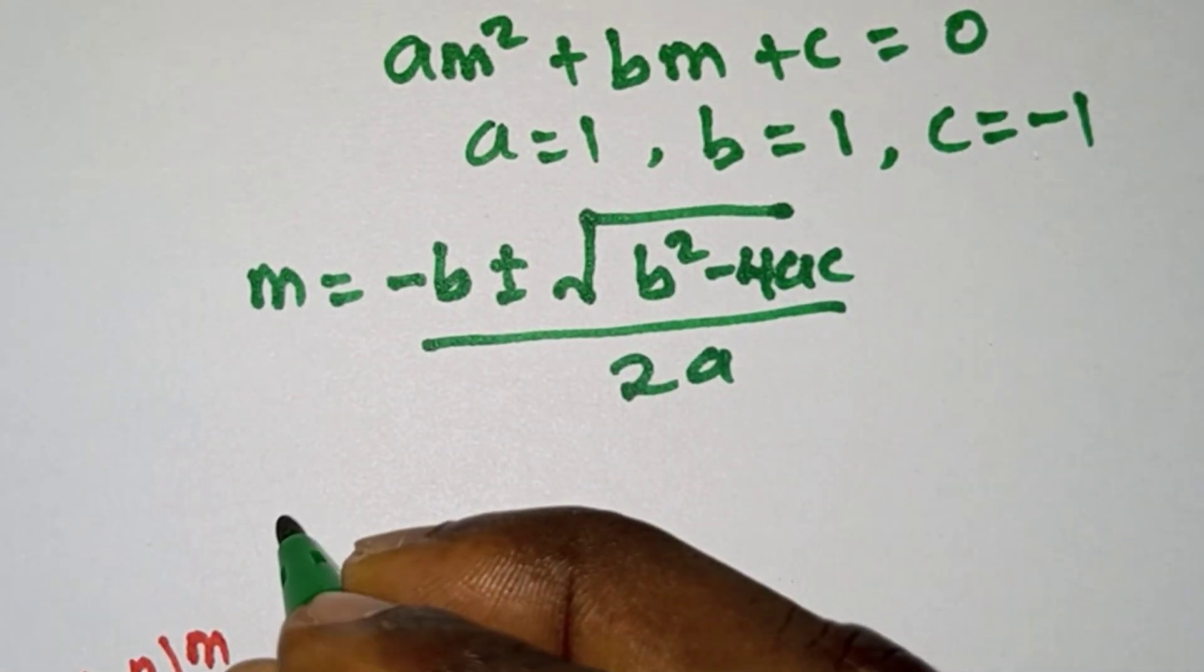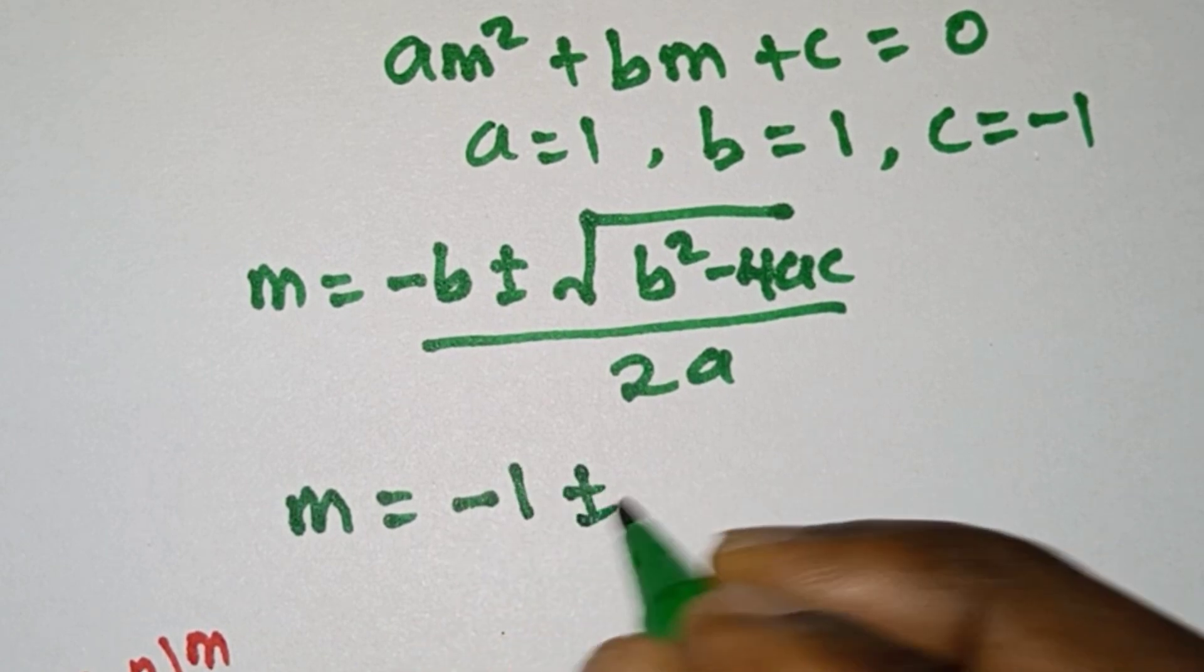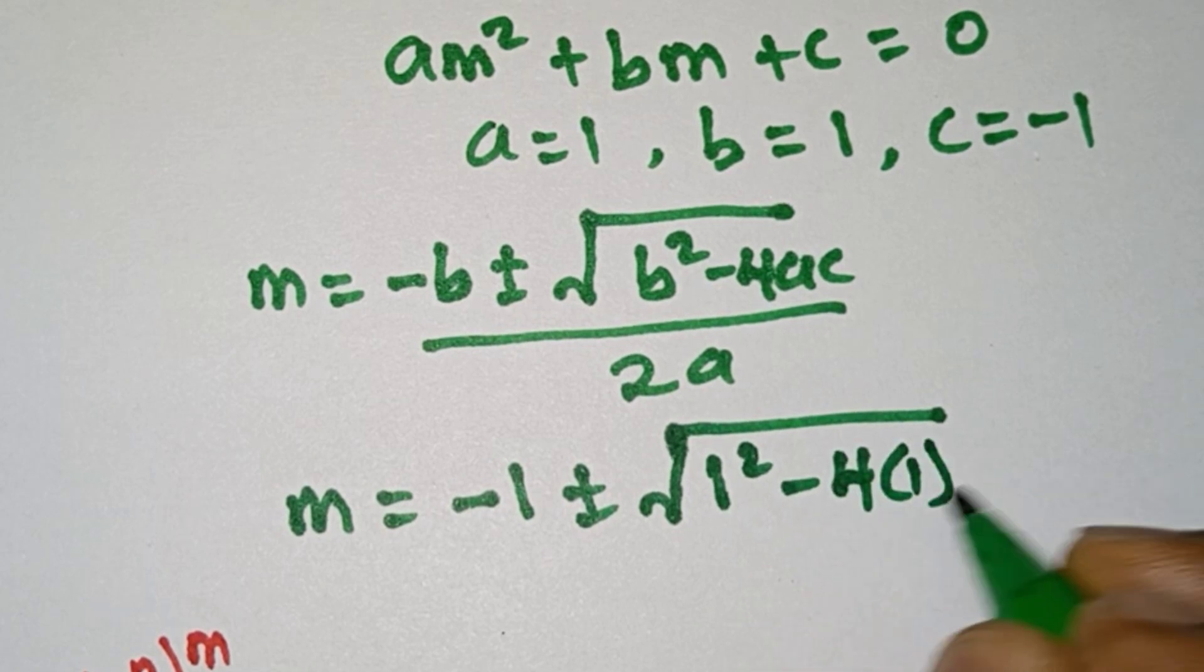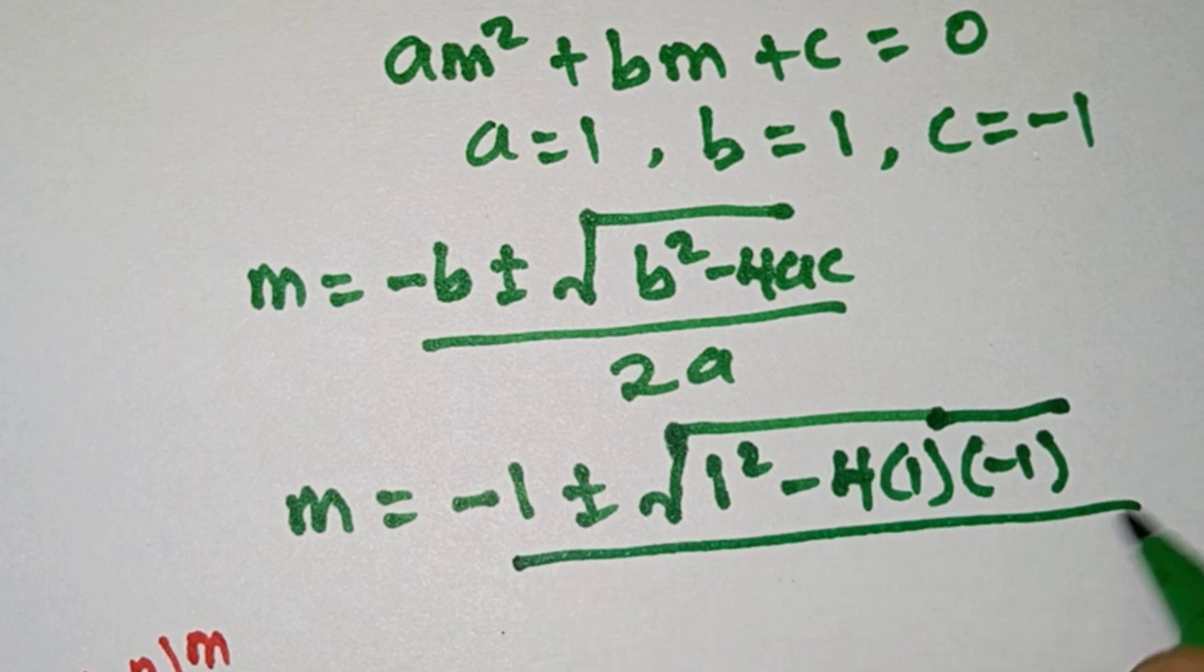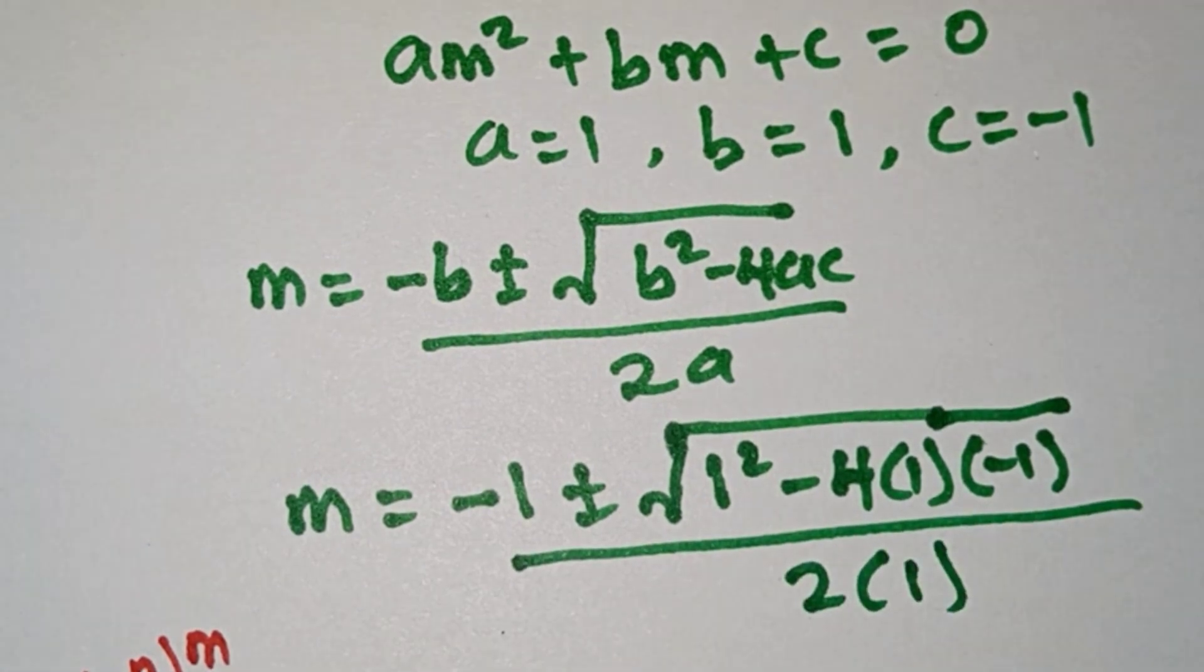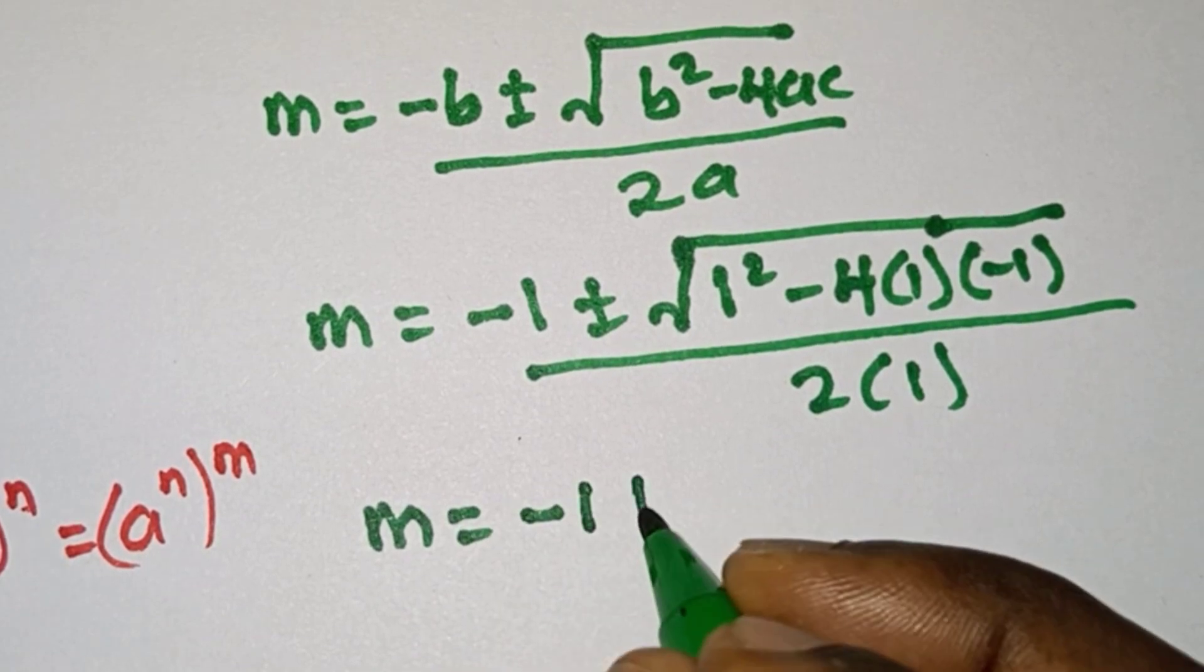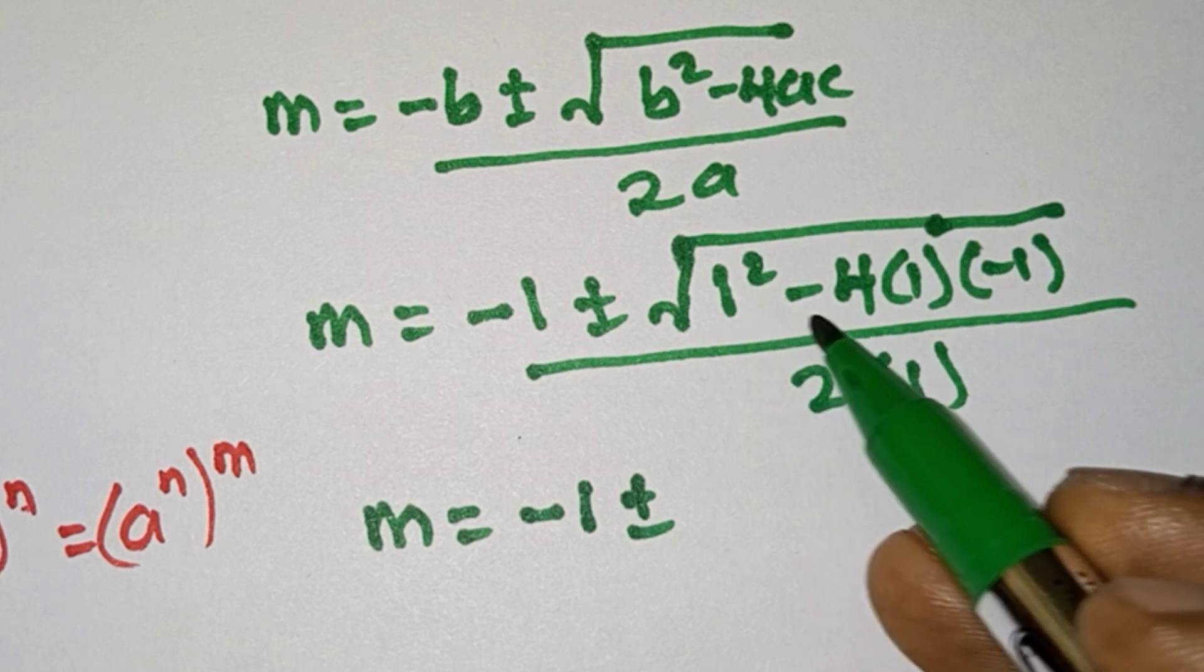So we have m = (-1 ± √(1 - 4(1)(-1)))/(2(1)). So we have m = (-1 ± √(1 + 4))/(2).